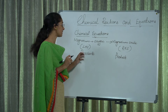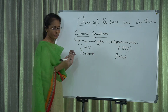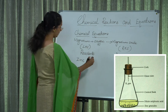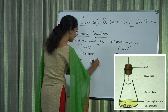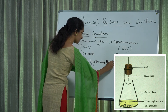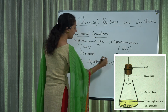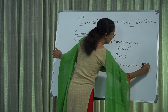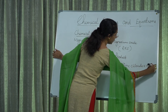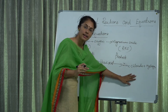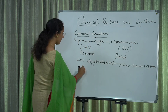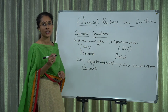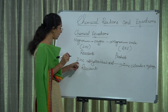In the second case — zinc and dilute hydrochloric acid react to form zinc chloride and hydrogen. Here the left-hand side has zinc and hydrochloric acid as reactants, and the right-hand side has zinc chloride and hydrogen as products.